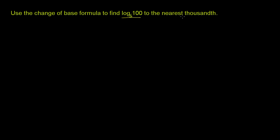Use the change of base formula to find log base 5 of 100 to the nearest thousandth. The change of base formula is a useful formula, especially when you're going to use a calculator, because most calculators don't allow you to arbitrarily change the base of your logarithm. They have functions for log base e, which is the natural logarithm, and log base 10. So you generally have to change your base.